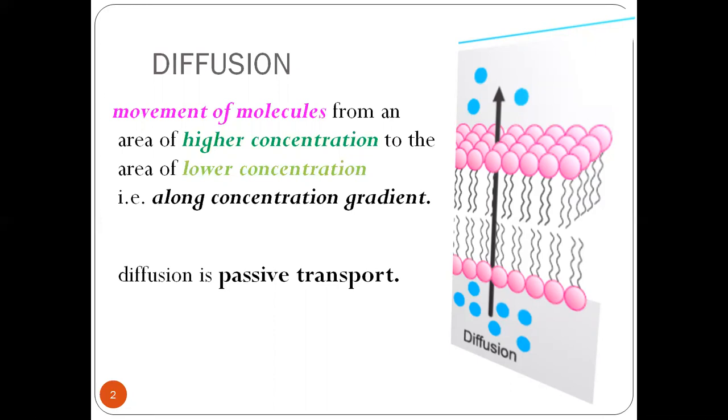There are two types of transports. One is active transport, the other is passive transport. In active transport, ATP is used. Energy is expended.